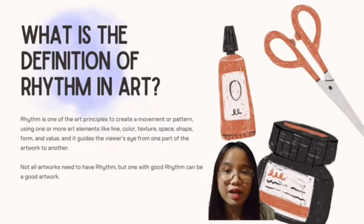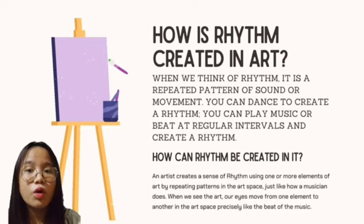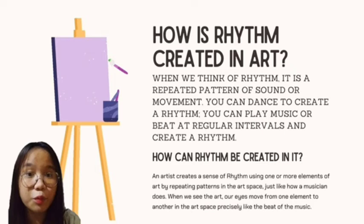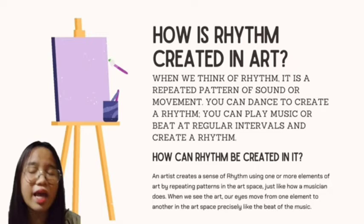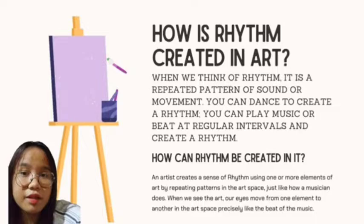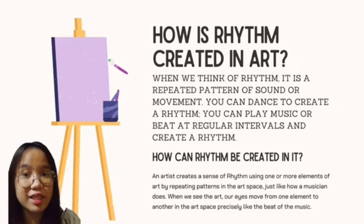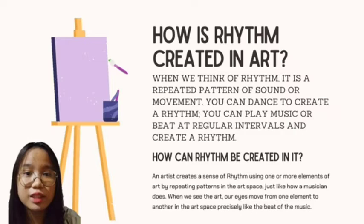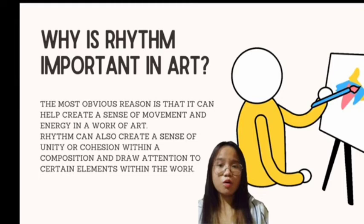It guides the viewer's eye from one part of the artwork to another. When we talk about rhythm, it is a repeated pattern of sound or movement. You can dance to create a rhythm. You can play music or beat at regular intervals and create a rhythm. Art is a stationary work without any movement, so an artist creates a sense of rhythm using one or more elements of art by repeating patterns in the art space, just like how a musician does. When we see the art, our eyes move from one element to another precisely like the beat of the music.